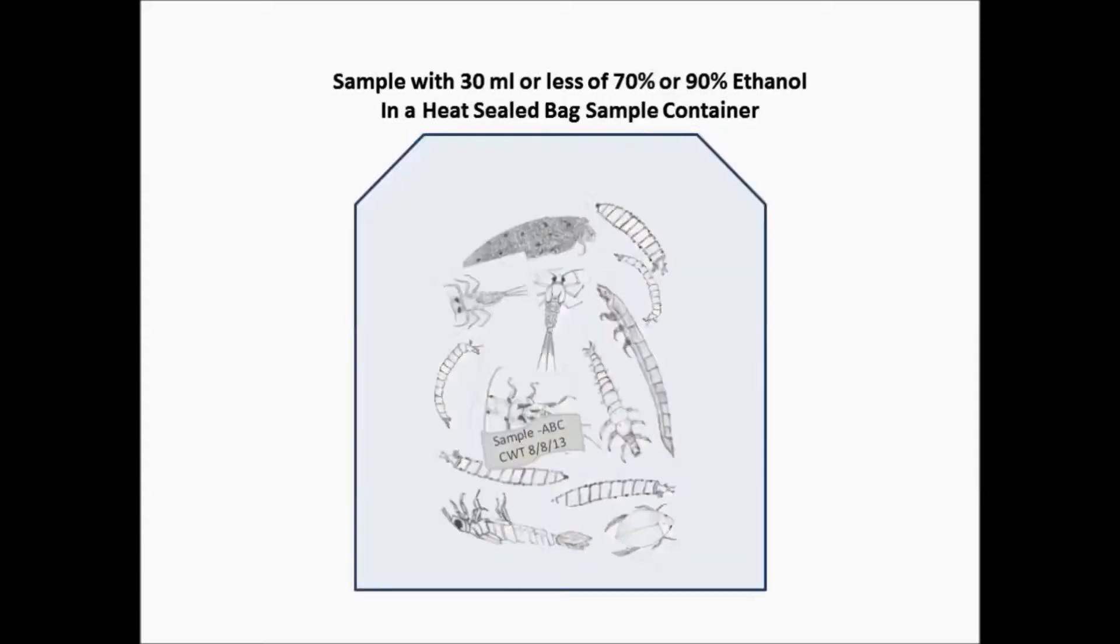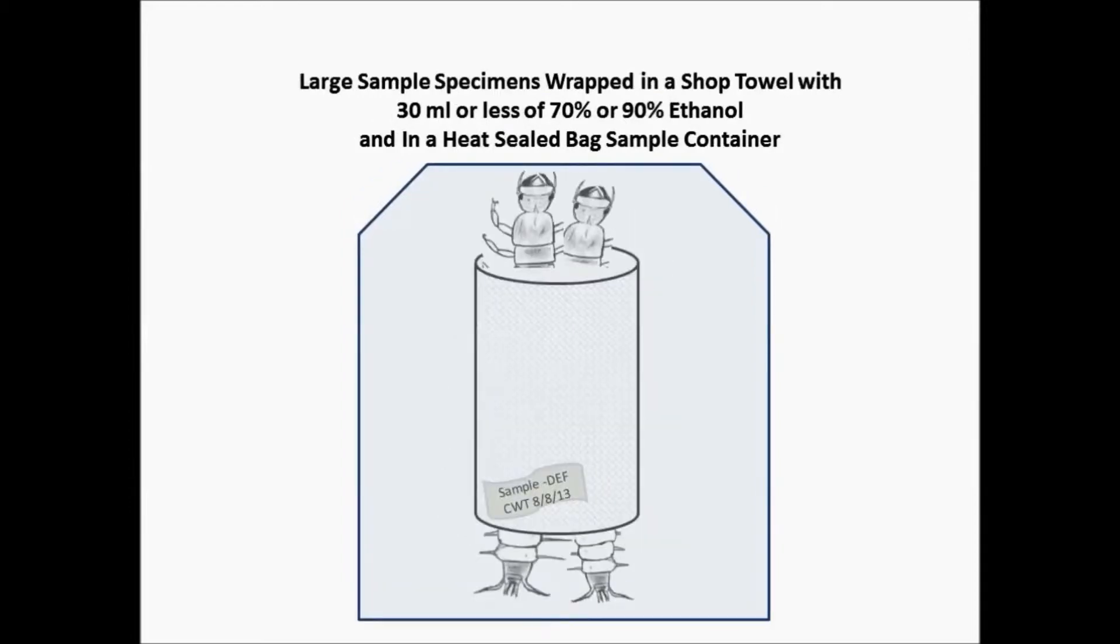Alternatively, you can take your unpicked sample and place it on a paper towel soaked in ethyl alcohol. Wrap your sample gently and place it into a plastic bag, which is then heat sealed. This works great for very large specimens.